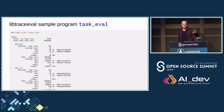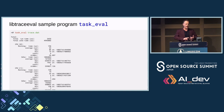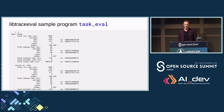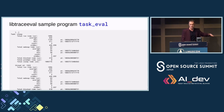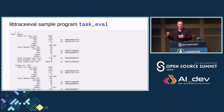Inside the libtraceeval repository there's a task_eval program already written for you. I use this all the time — it gives CPU idle time, run time for tasks, and breaks it down per every task. It gives how long the task ran (max, min, average, standard deviation), wakeup latency (average wakeup latency), block time (task uninterruptible state), sleep time (task interruptible state), and preempted time — how long a task was running before something higher-priority kicked it off. A lot of information, and the program isn't that big.